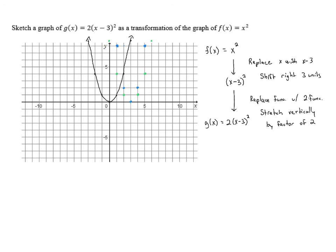The two points that are up high, when we double their y-coordinates, go all the way up to 18, which is off the graph, so we won't worry about those. Instead, we draw a parabola through the points we have, and this is our graph of g of x equals 2 times the quantity x minus 3 squared.